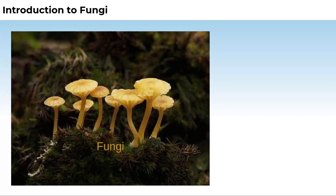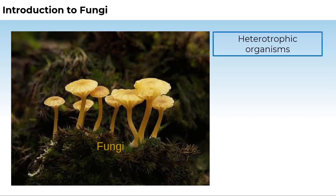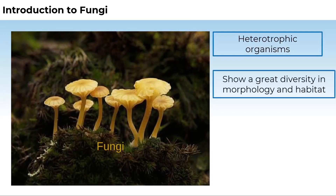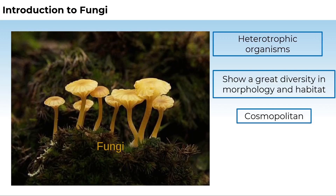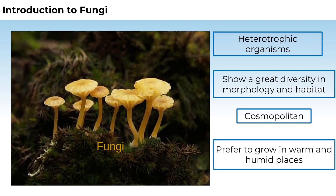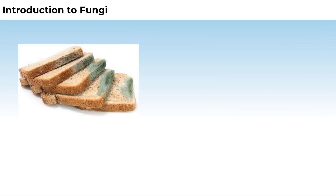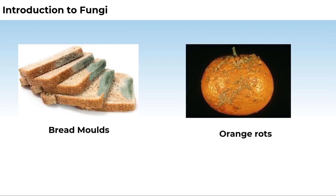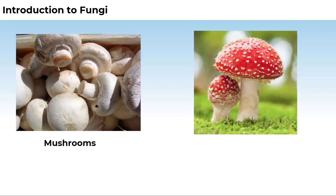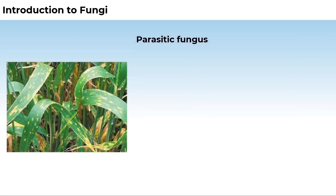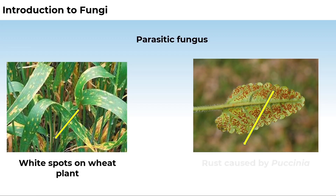Fungi constitute a unique kingdom of heterotrophic organisms. They show great diversity in morphology and habitat. Fungi are cosmopolitan, meaning they occur in air, water, soil, and on animals and plants, preferring to grow in warm and humid places. Common examples include fungi on moist bread and rotten fruits, mushrooms, and toadstools. White spots on mustard leaves are due to a parasitic fungus, and wheat rust caused by Puccinia is an important example.